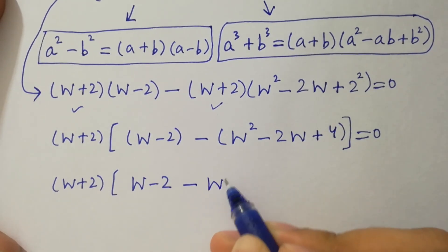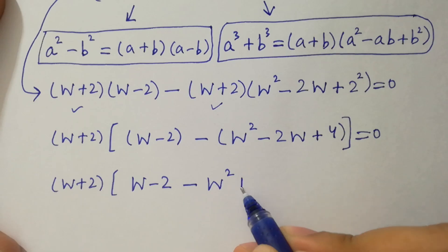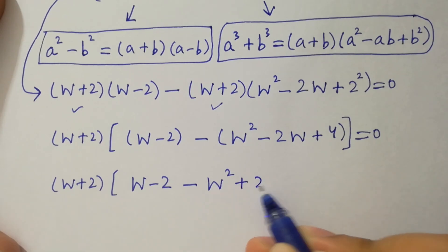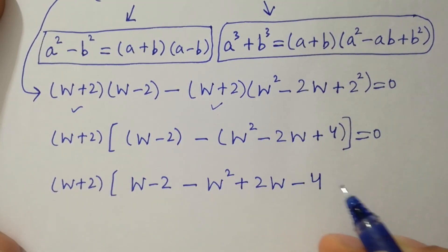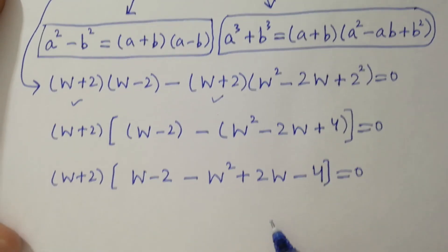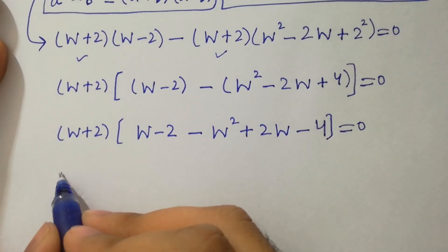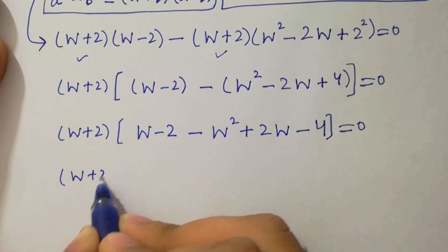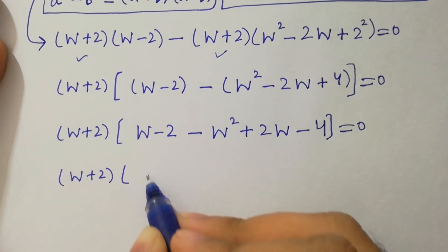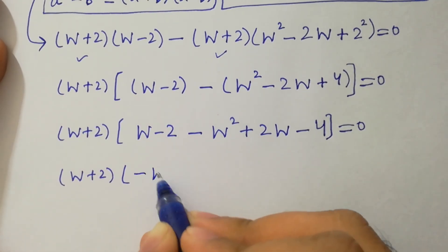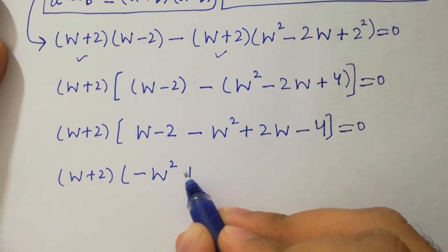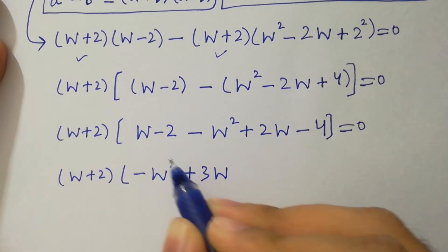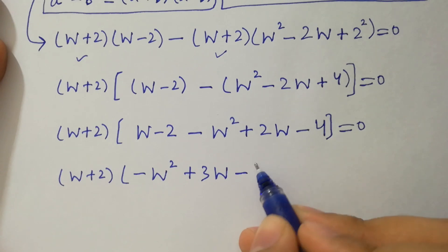After factoring and collecting terms, we get w plus 2, times the expression minus w squared plus 2w minus 4, equal to zero. Simplifying inside: minus w squared plus three w minus six equal to zero.